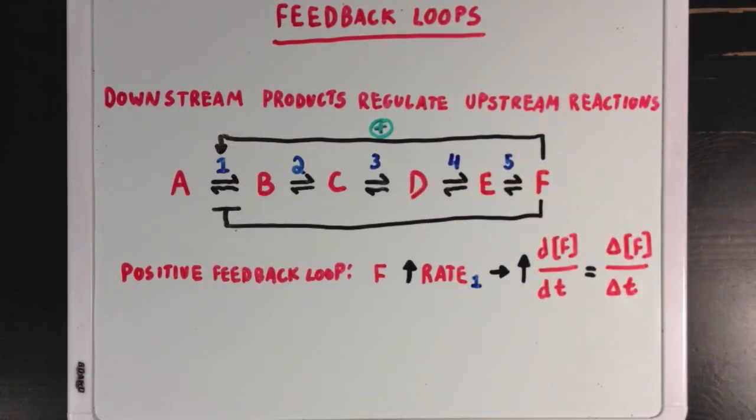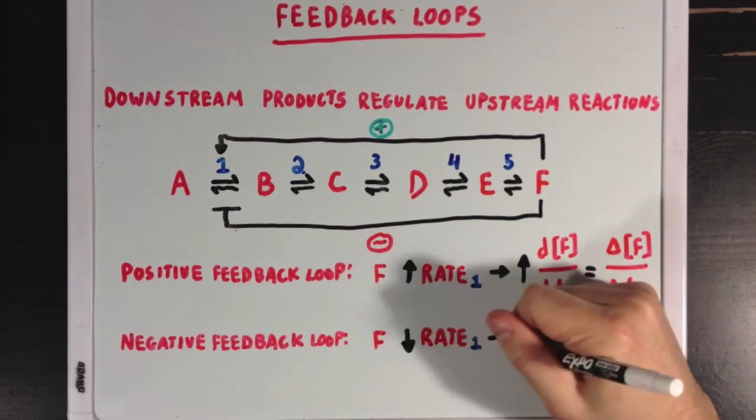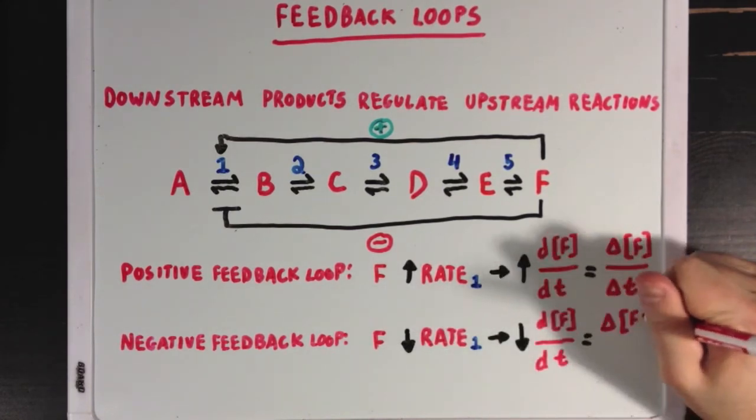Now let's say molecule F had a negative effect on enzyme 1. We would call this a negative feedback loop, since molecule F decreases the rate of reaction 1, which leads to a decrease in the rate of formation of molecule F.